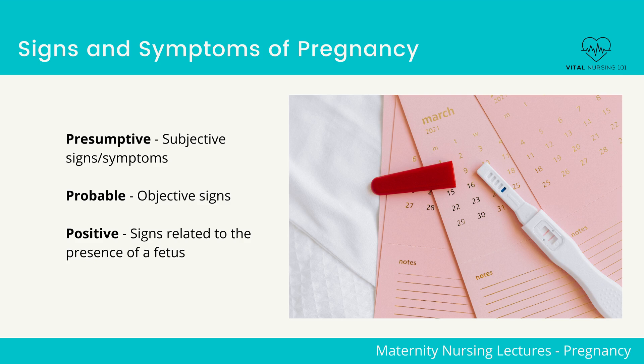Probable signs. These are signs you can see and measure. These signs include cervical changes, and Hegar's sign, which is a softening and compressibility of the lower uterus.